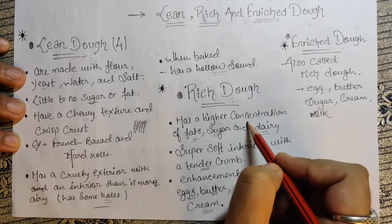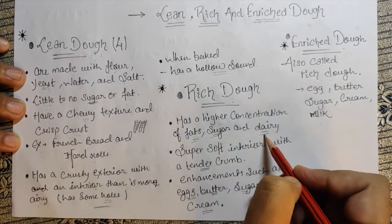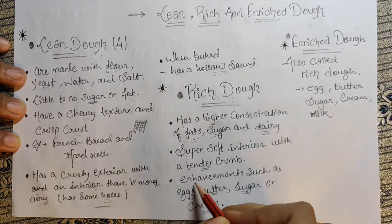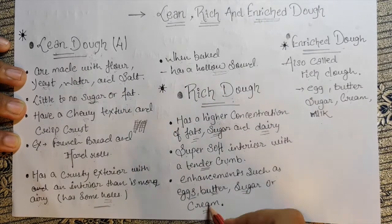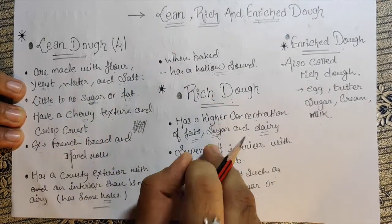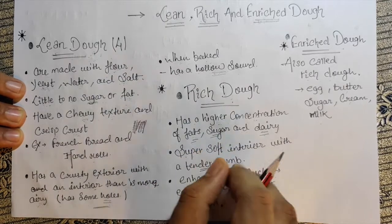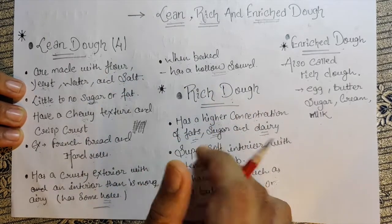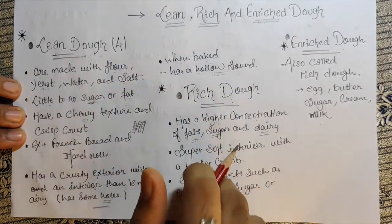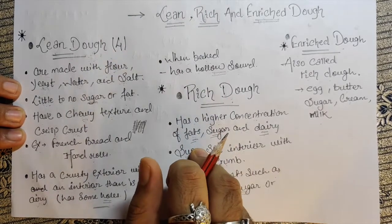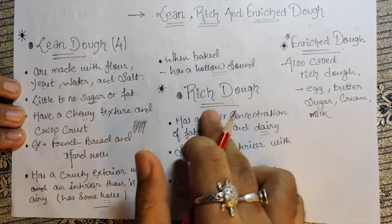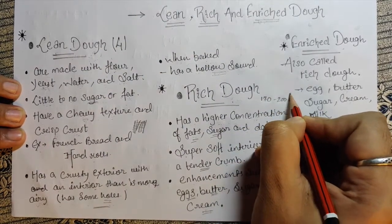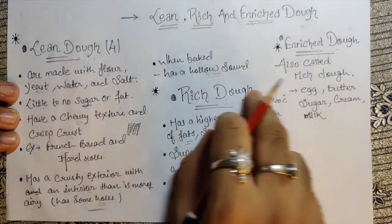Rich dough has a high concentration of fat, sugar, and dairy. It has a super soft interior with a tender crumb. Enhancements such as butter, eggs, sugar, or cream are added — usually 20 percent plus fat. Rich dough sometimes has a little bit of yeast and requires longer and stronger kneading. Rich doughs can be baked at 170 to 200 degrees Celsius.